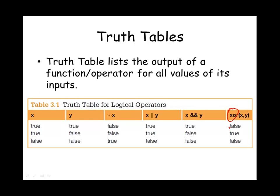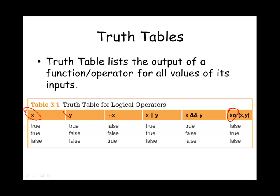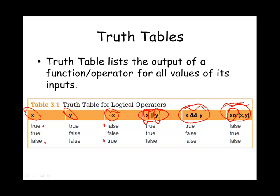The functionality of a logical operator can be described in a truth table. The truth table lists the output of an operator for all of its input values. With operands X and Y, we show the result of NOT X, OR, AND, and XOR. NOT X is always the opposite of X. The result of X OR Y is true if at least one operand is true. X AND Y is true only if both operands are true. XOR of X and Y is true if and only if exactly one operand is true.